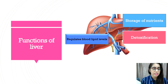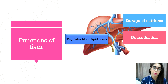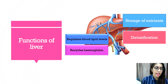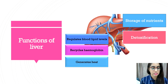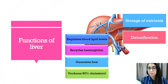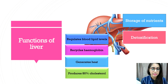Other functions of the liver include regulating blood lipid levels — excess blood lipids are removed and converted into carbohydrates or stored in adipose tissue. The liver also recycles hemoglobin; when red blood cells die, hemoglobin is converted into bile pigment, and the iron in hemoglobin is stored for future use. Additionally, the liver generates heat carried to the whole body through the blood circulatory system for maintenance of normal body temperature. The liver also produces about 80% of cholesterol, which is important for building cell membranes, hormones, vitamin D, and bile for fat digestion.